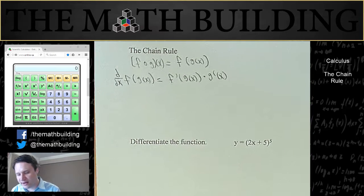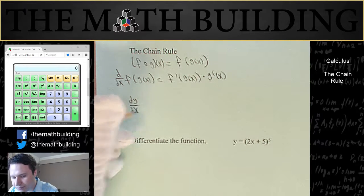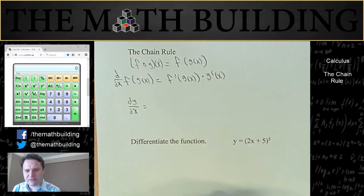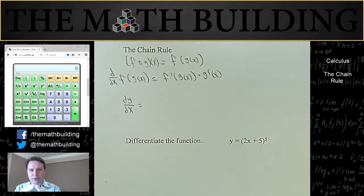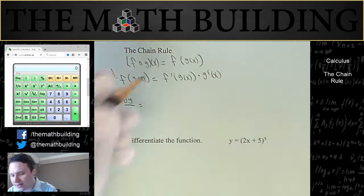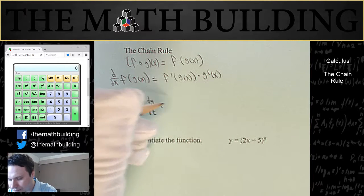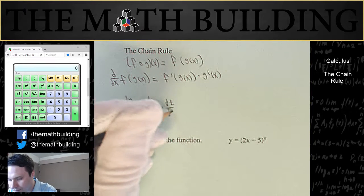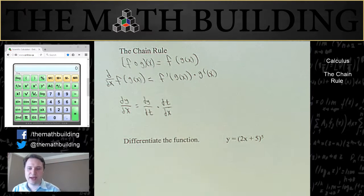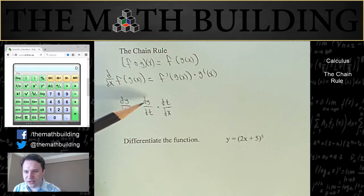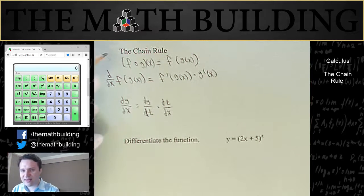So another way of writing that in Leibniz notation is dy dx is equal to. So say we want to find dy dx, but we don't have a way to relate y and x to each other. We have a third variable in the middle that we have to pass through to get from x to y. So here's another way to represent it. So you would have, let's say we have some variable t that we have to pass through to get from x to y. Then dy dx would equal dy dt times dt dx. So that's how you represent the chain rule.